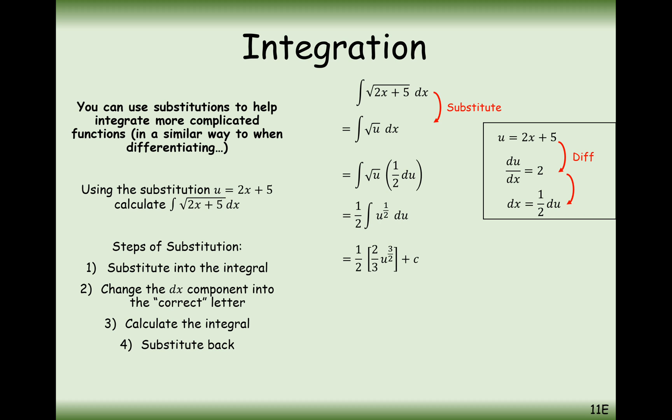Let's now go ahead and calculate the integral. We are increasing the power by 1 to 3 over 2 and dividing by 3 over 2. When you divide by 3 over 2, you times by 2 over 3, plus c. You can expand the brackets and substitute back in your substitution for u equaling 2x plus 5. The 2's cancel out, giving 1 third times (2x plus 5) to the power of 3 over 2, plus c.